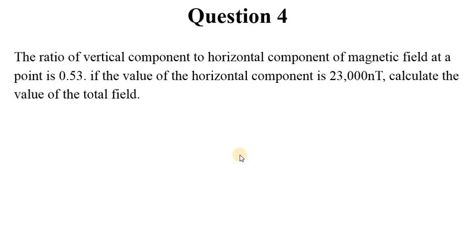Question 4: The ratio of the vertical component to horizontal component of magnetic field at a point is 0.53. So we are comparing horizontal component and vertical components. Magnetic fields have components, that is from theoretical work. If the value of the horizontal component is 23,000 nanoteslas, calculate the value of the total field.